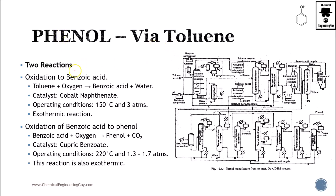Phenol via the toluene route. We're going to start with two reactions. The first one is oxidation to benzoic acid. Toluene in contact with oxygen with the cobalt naphtinate catalyst at 150°C and three atmospheres is going to produce benzoic acid and water, of which we're going to separate them for further treatment.